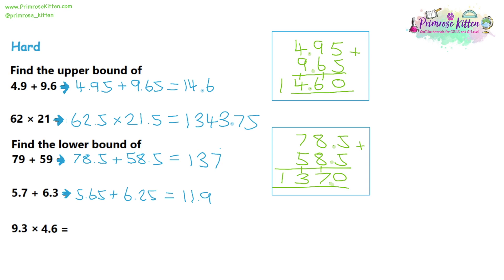For the final question, these are written to one decimal place, so that's probably what they've been rounded to. Finding the lower bound, I go down by 0.05. For 9.3, going down gives 9.25, and for 4.6, going down gives 4.55. This is going to be a calculator question, so type 9.25 multiplied by 4.55 to get 42.0875. For a question like this, we absolutely don't want to round our answer because we're finding the lowest possible number the calculation could give. Only round answers if you've been explicitly told to by the question.